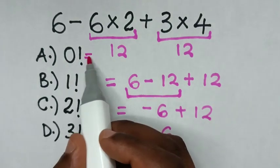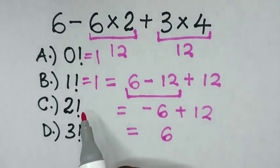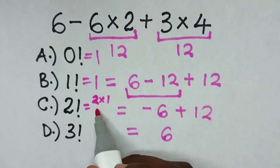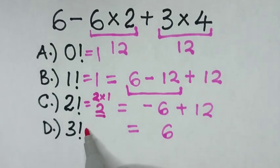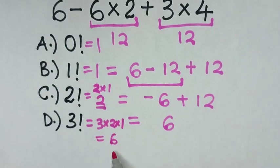0 factorial is equal to 1, and 1 factorial is equal to 1, and 2 factorial is equal to 2, 2 times 1, which is equal to 2, and 3 factorial is 3 times 2 times 1, which is equal to 6.